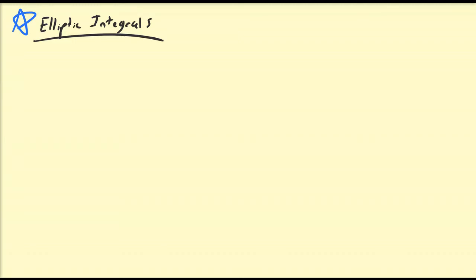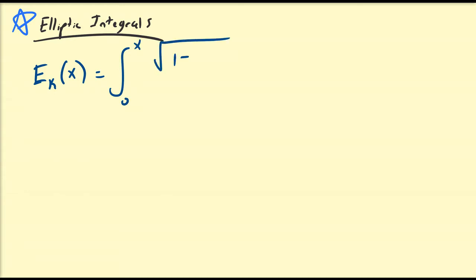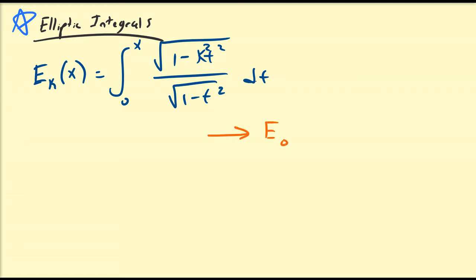Hello there. In this video we're going to continue our discussion of elliptic integrals. In the last video — I definitely recommend watching that — the elliptic integral E with parameter k of some variable x was defined to be equal to the integral from 0 to x of the square root of 1 minus k squared t squared, all over the square root of 1 minus t squared, dt. Using the properties of geometry, we verified that E_0(1) was equal to π over 2.